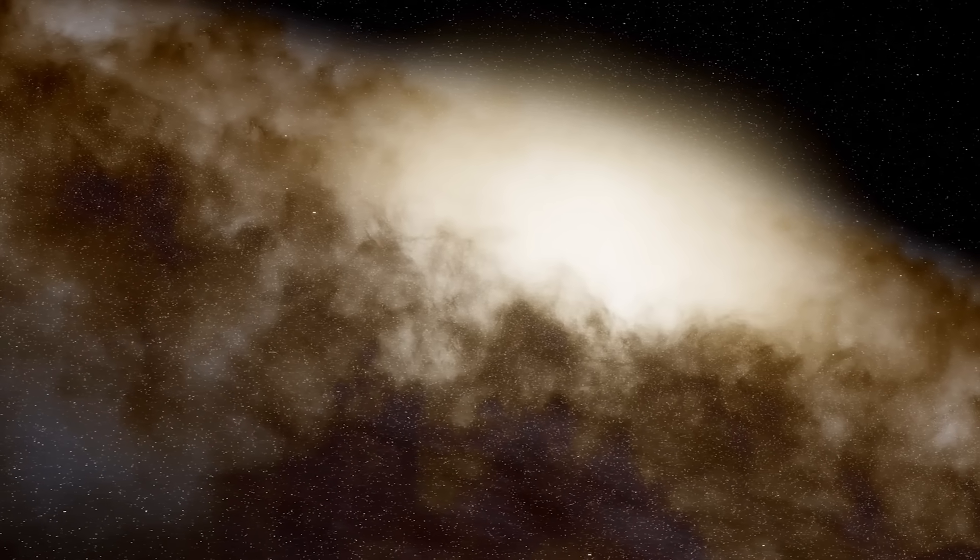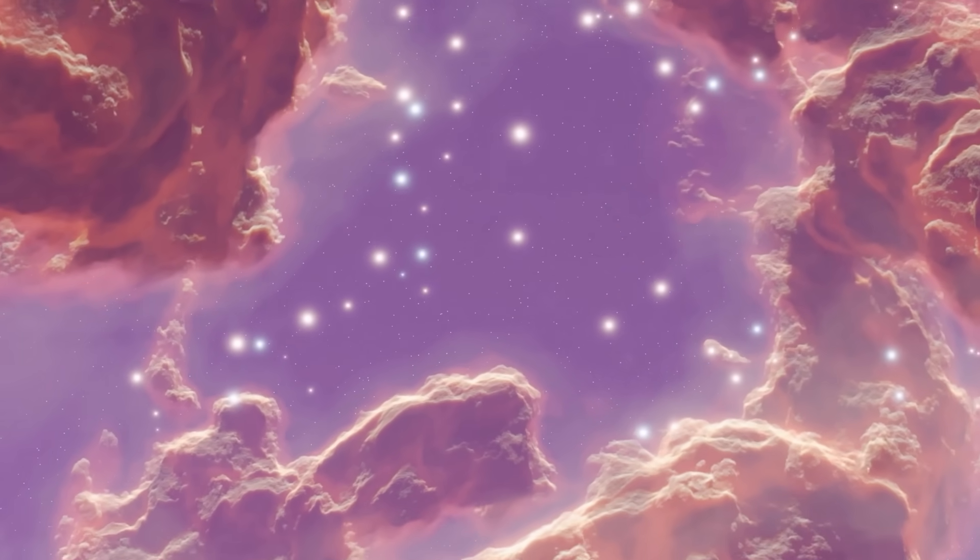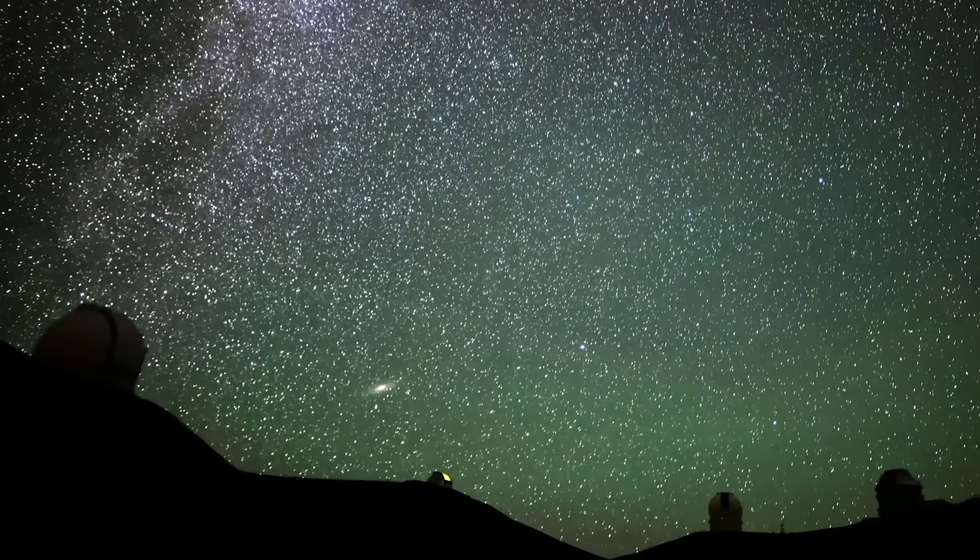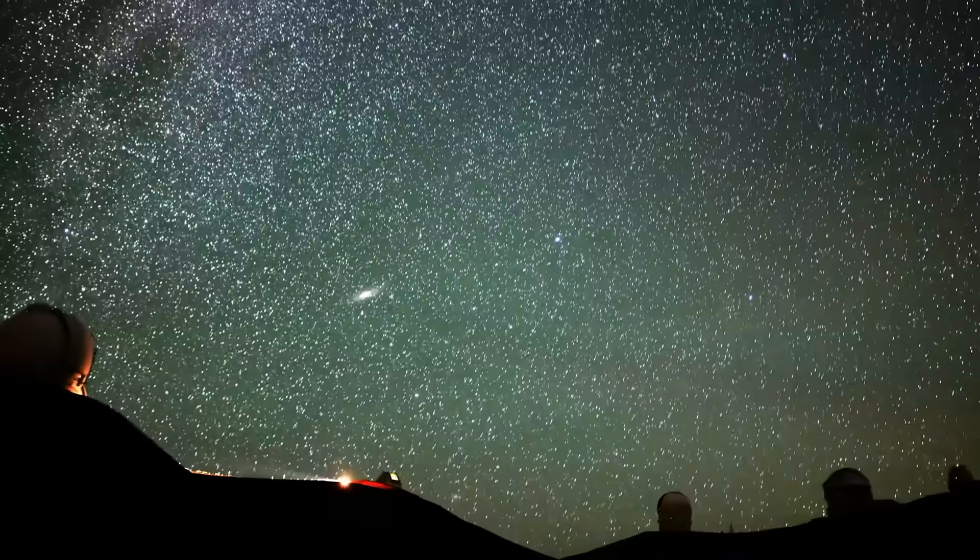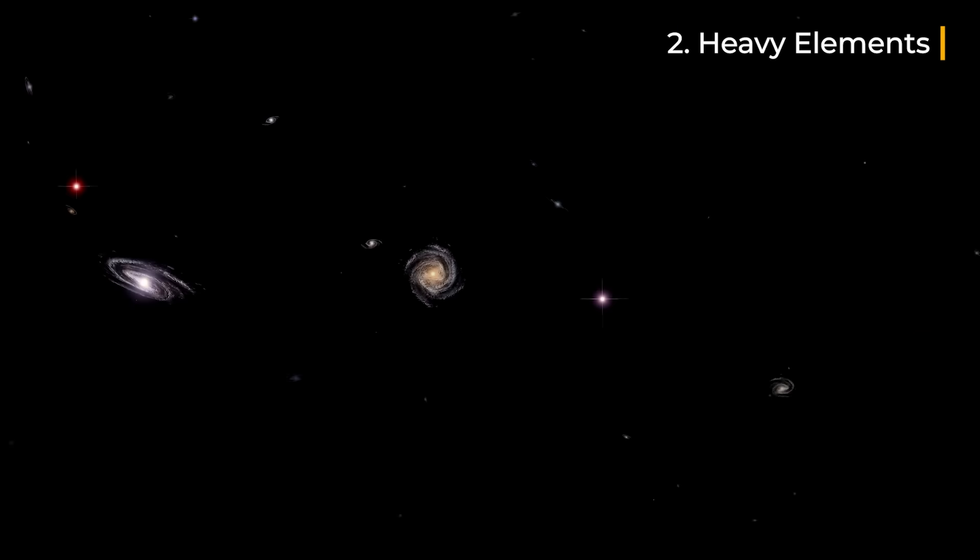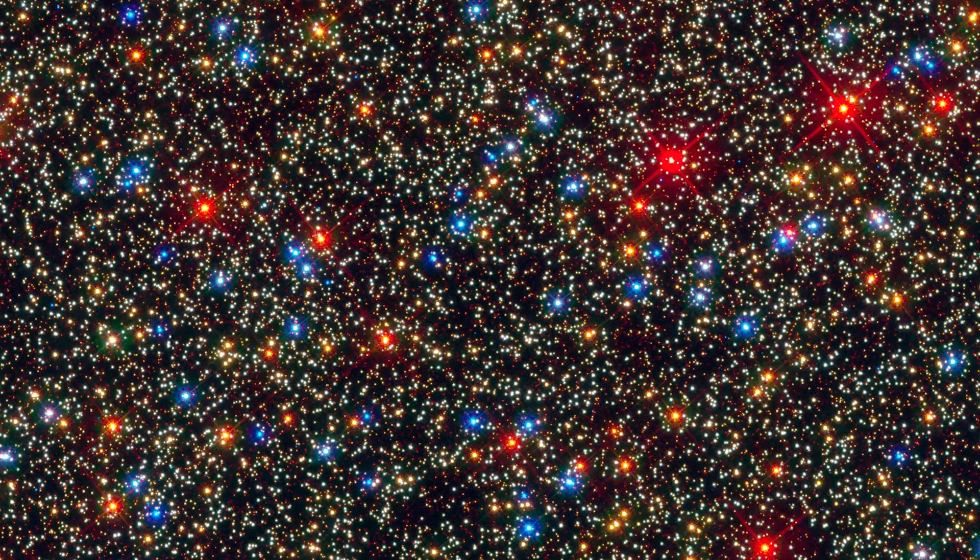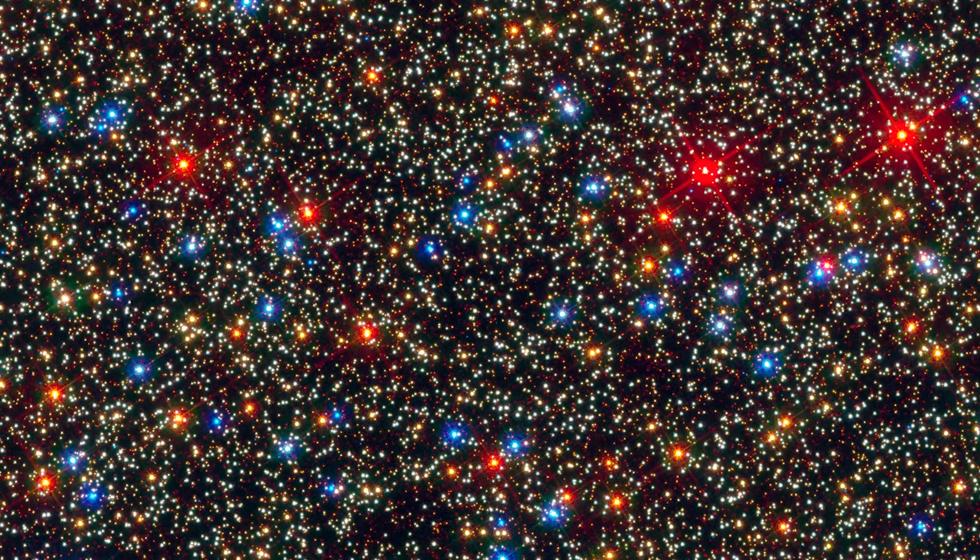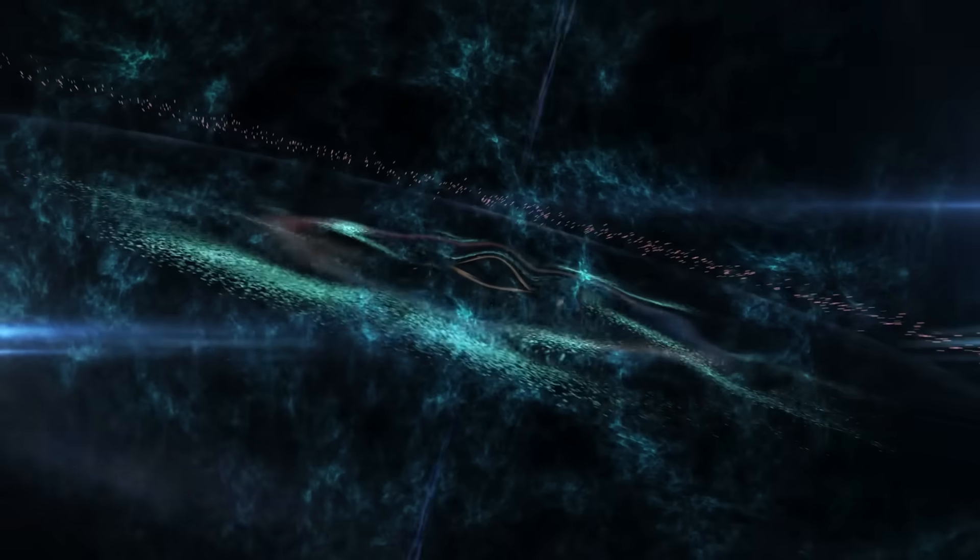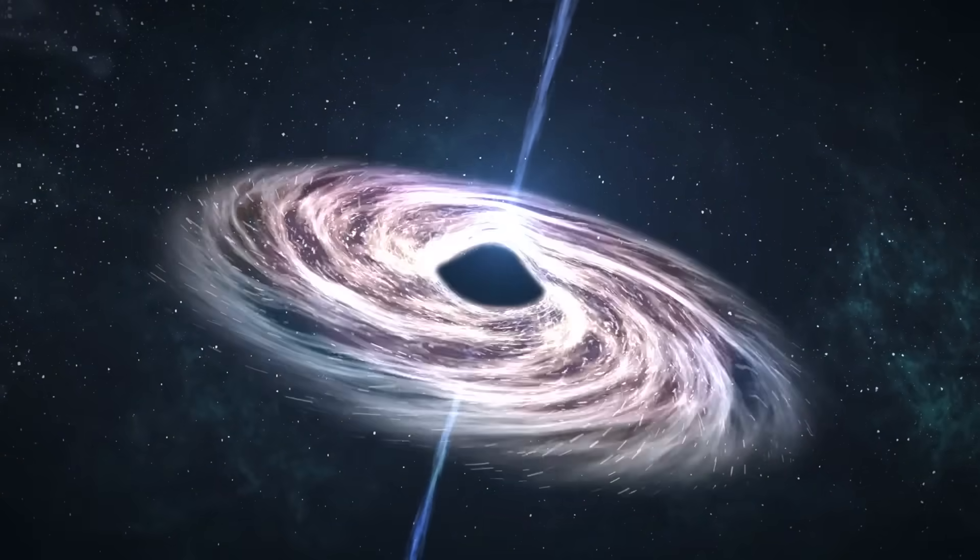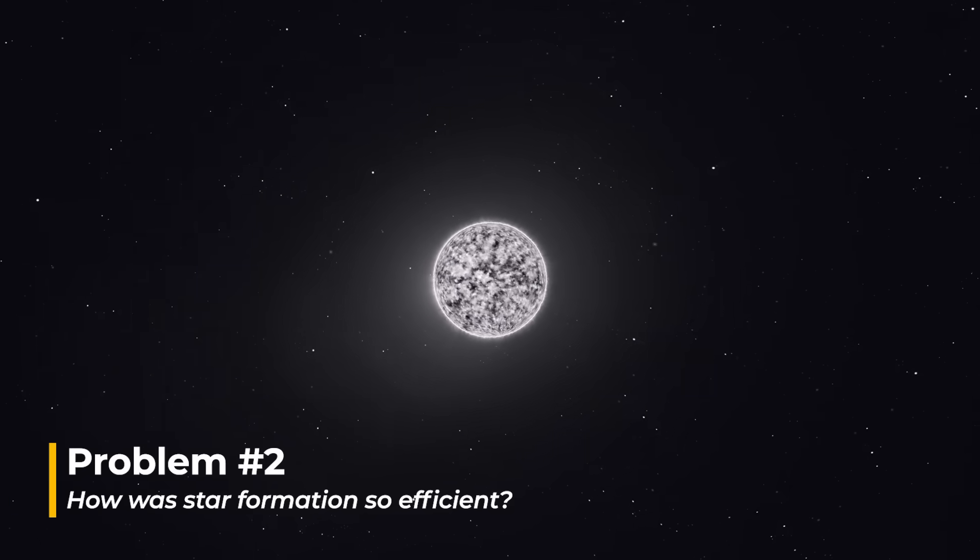Perhaps the gas in these galaxies was denser than we thought. Maybe it cooled faster or interacted with dark matter in unexpected ways. Whatever the reasons, it's clear that our existing models need to be updated to reflect these observations. Adding to the puzzle, some of these early galaxies also contain heavy elements like nitrogen and oxygen, which can only be created in stars. Their presence suggests that not only did massive stars form quickly, but they also lived and died fast enough to enrich their surroundings with new elements. That means multiple generations of stars must have already come and gone in just a few hundred million years.